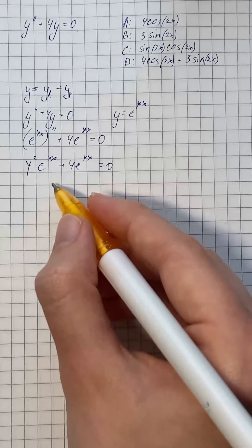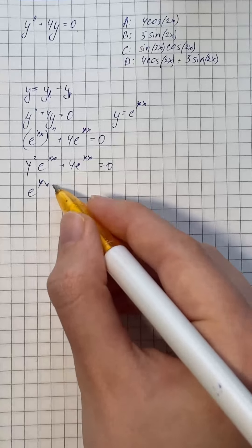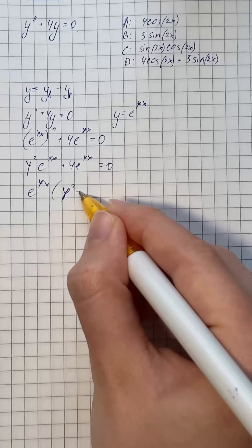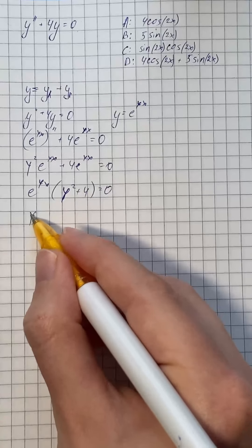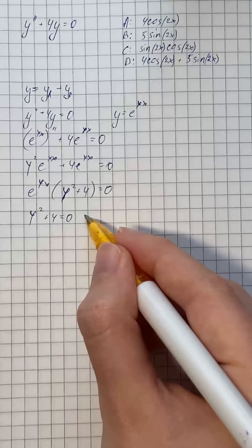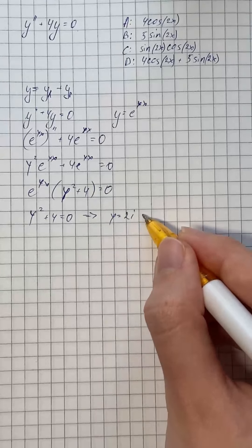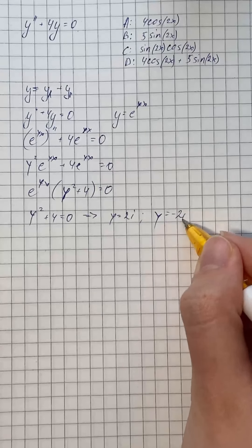So we can take out common factor, which is e to the power of gamma x times gamma squared plus 4 equals 0. Therefore we get that gamma squared plus 4 equals 0. And the roots are 2i and negative 2i.